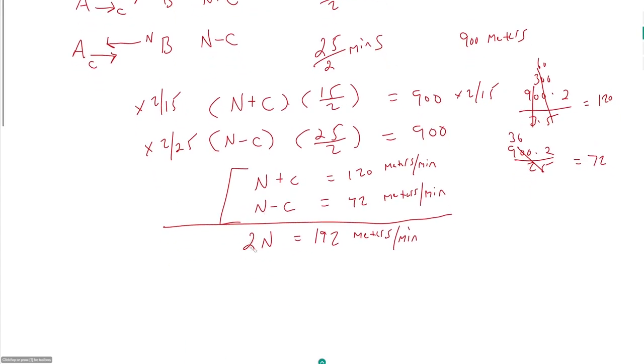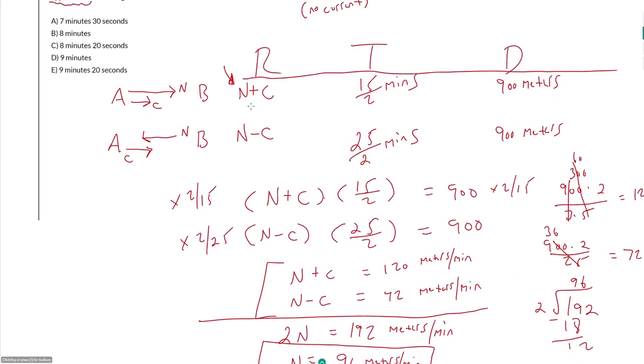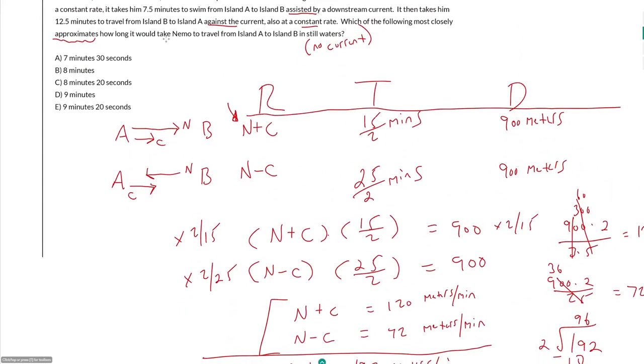So Nemo's rate is just 192 over 2 meters per minute. What is that? 96. So Nemo can swim at a rate of 96 meters per minute. You can tell me if that makes me a fast or a slow swimmer. I'm not done yet because I have to find the time, right?